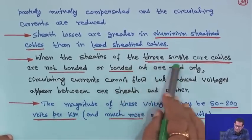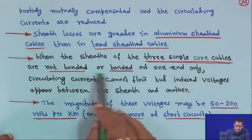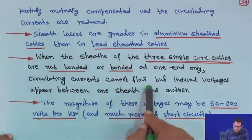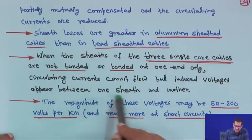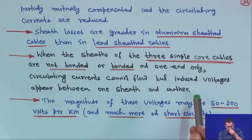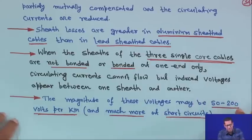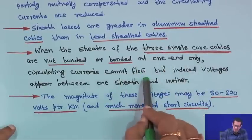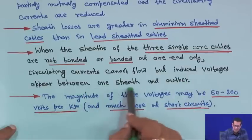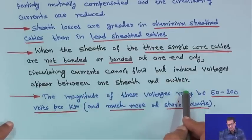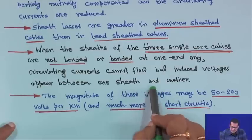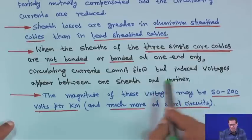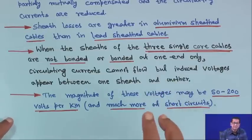When the sheaths of the 3 single core cables are not bonded or are bonded at one end only, circulating currents cannot flow, but induced voltages appear between one sheath and another. For 3 single core cables, this voltage will appear between one sheath and another.